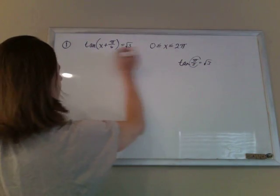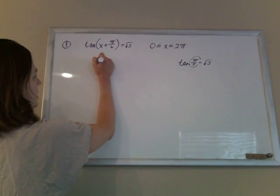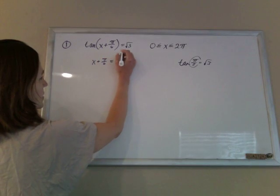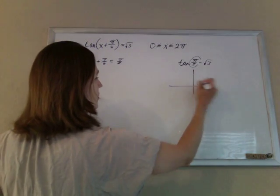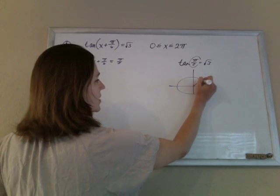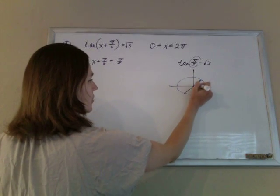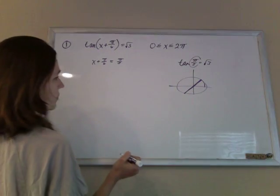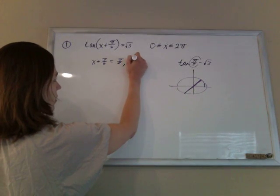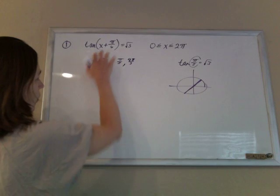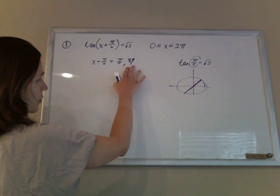So this angle here, the x plus pi 6, must be pi thirds. Or actually, aren't there two spots on the unit circle where the tangent is positive, both in the first and the third quadrant? So this angle down here is the 4 pi thirds. So this angle could be either pi thirds or 4 pi thirds.